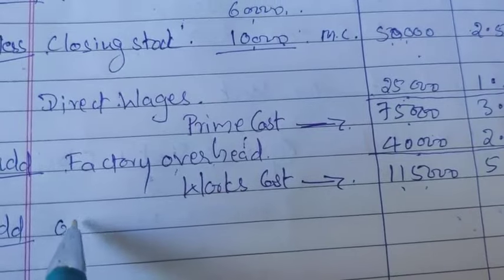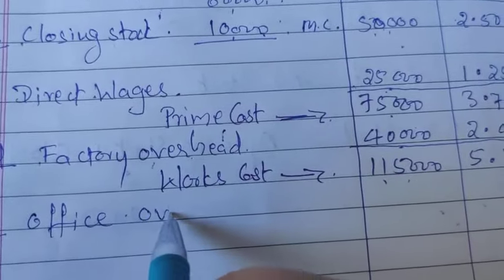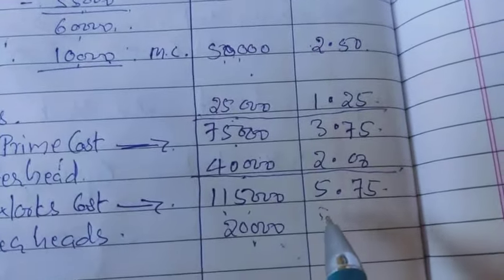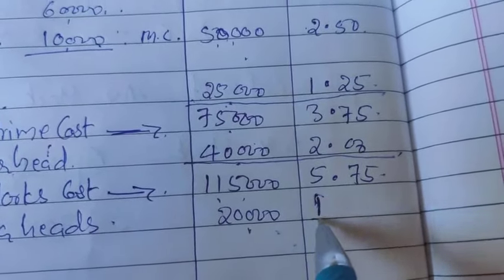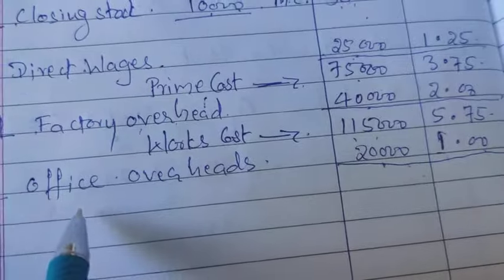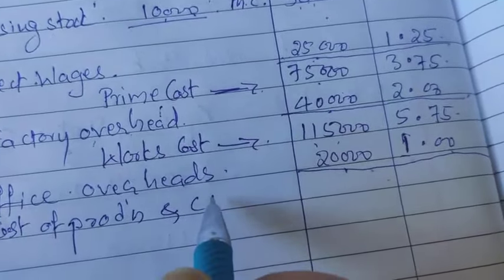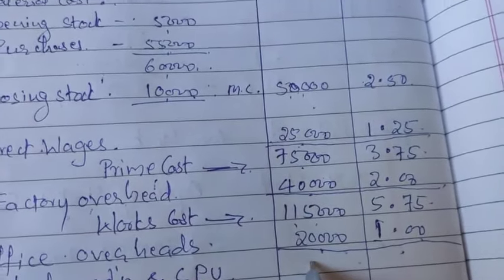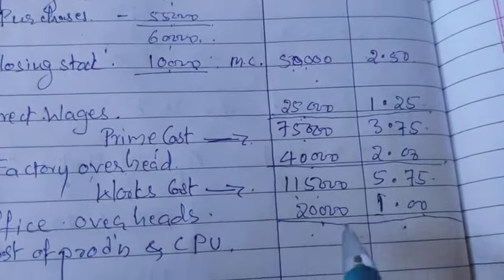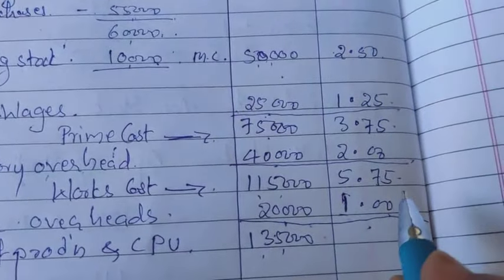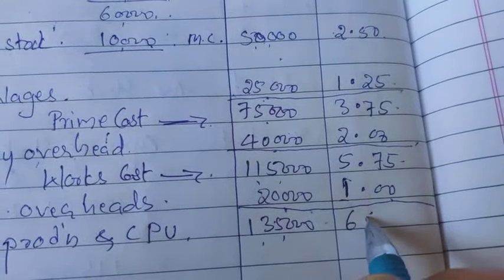Add office overhead, also called administrative overhead. Office overheads amount is $20,000. Cost per unit: $20,000 divided by 20,000 units equals $1. Total cost of production is $1,35,000 and the cost per unit is $6.75.